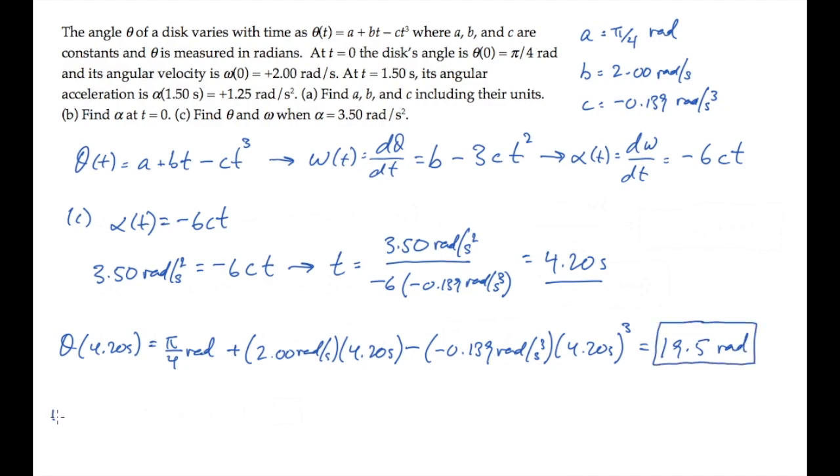And now for omega, that equals b minus 3ct squared. Calculate to find that equals 9.36 radians per second.